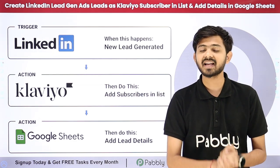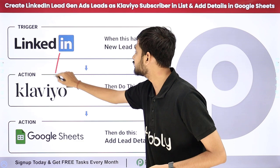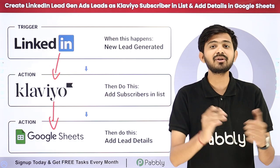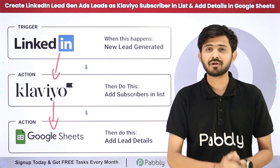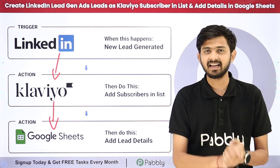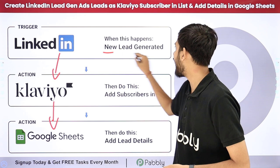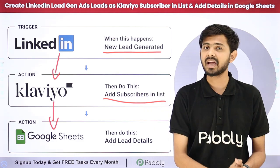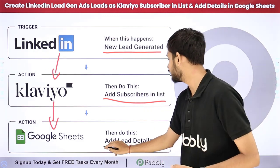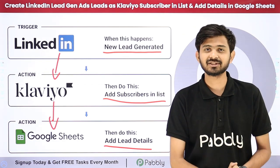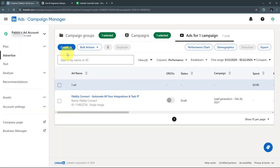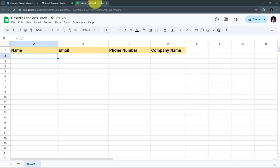To do this automatically, I need to build a connection between LinkedIn Lead Gen Ads, Klaviyo, and Google Sheets. For that, I'm going to use Pabbly Connect, which is an amazing software for automation and integration. With Pabbly Connect, whenever I receive a new lead through LinkedIn Lead Gen Ads, I'll first create a subscriber in a list and then add all the lead details in my Google Sheet.